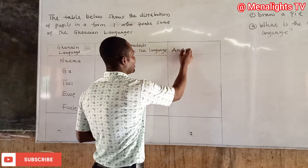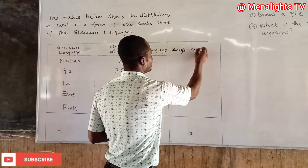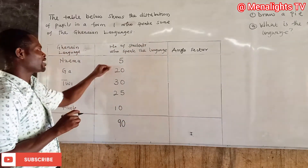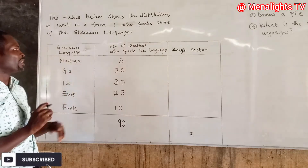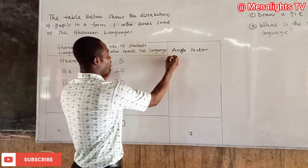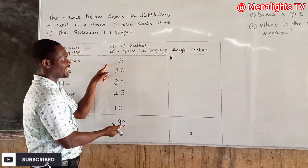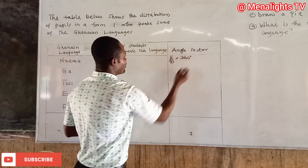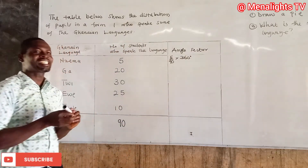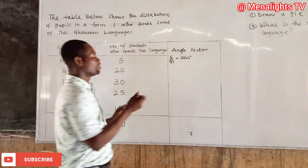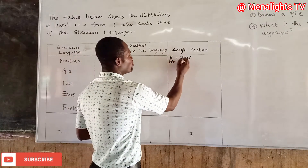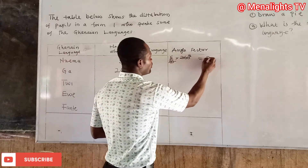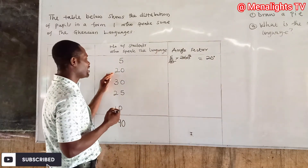We calculate the angle sector for each Ghanaian language. For Nzima, we have 5 people out of the total 90, so the calculation is (5/90) × 360 degrees. Since 90 goes into 360 four times, 4 × 5 gives us 20 degrees.